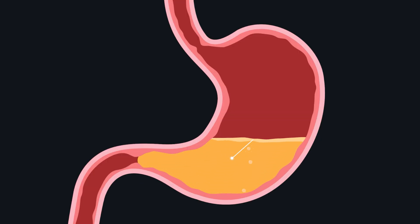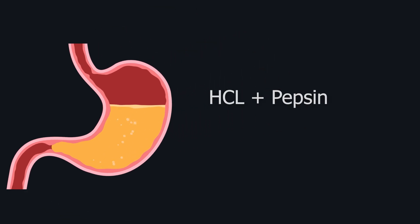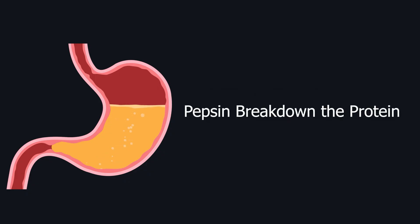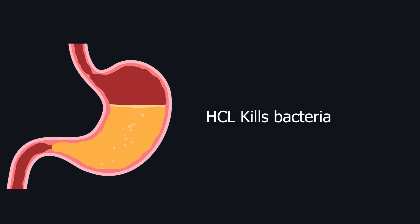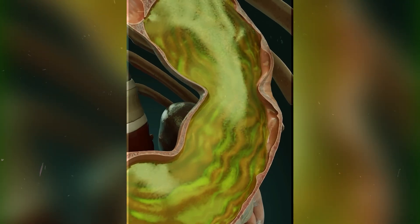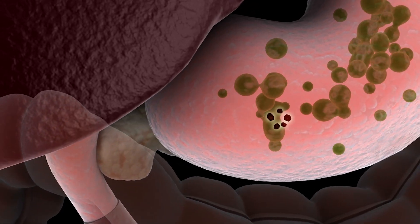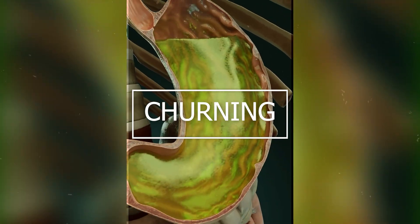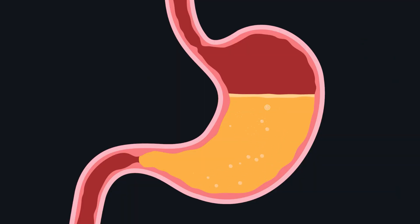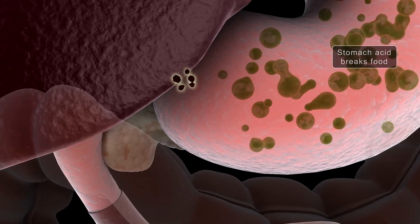The stomach continuously secretes gastric juice, which plays a key role in chemical digestion. Gastric juice mainly consists of HCl (hydrochloric acid) and the enzyme pepsin. Pepsin helps break down proteins, while HCl kills harmful bacteria and dissolves food. The stomach also secretes mucus, which protects the stomach lining from acid damage. The stomach muscles keep contracting and relaxing to mix food with gastric juice — a process called churning. After digestion, food turns into a semi-liquid substance called chyme, which then moves into the small intestine.